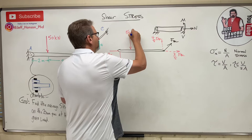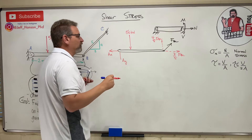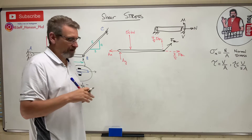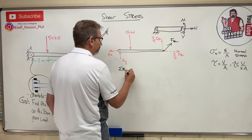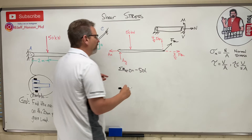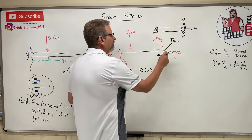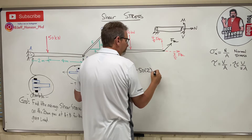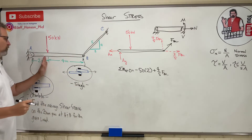We have a 50 kilonewton load. Ax goes to the left since the 3/5 component goes right, and Ay goes up. Taking sum of moments at point A: minus 50 times 2 (the distance), then (4/5)FBC times 6 (two plus four) equals zero.